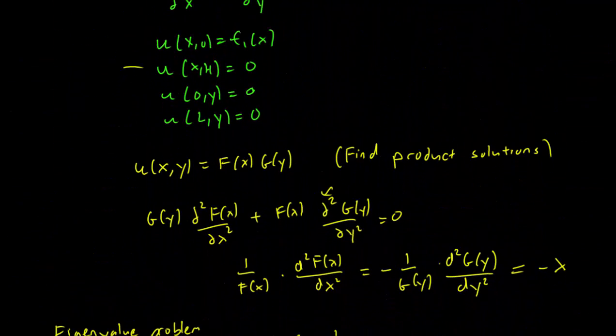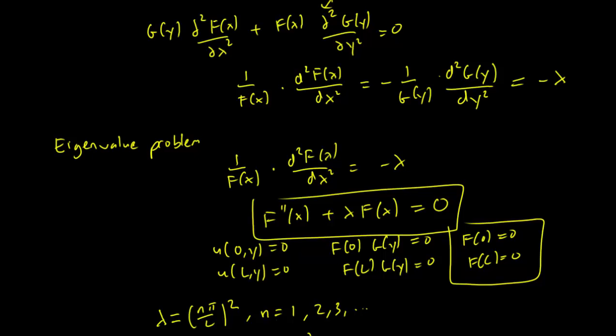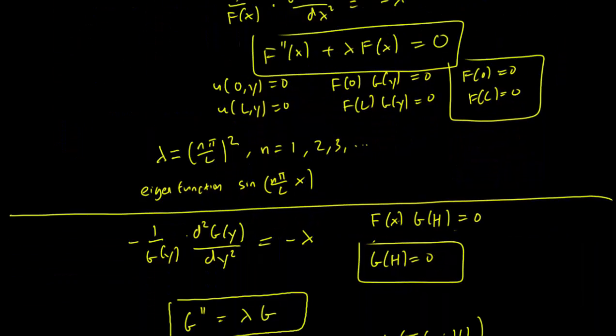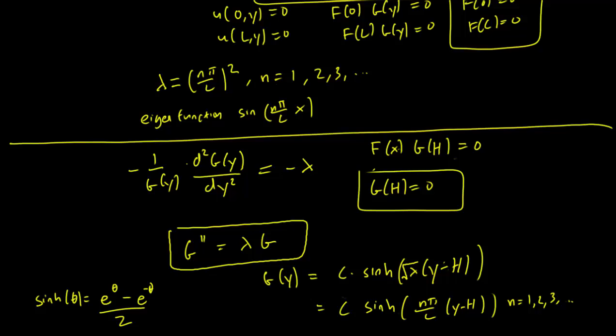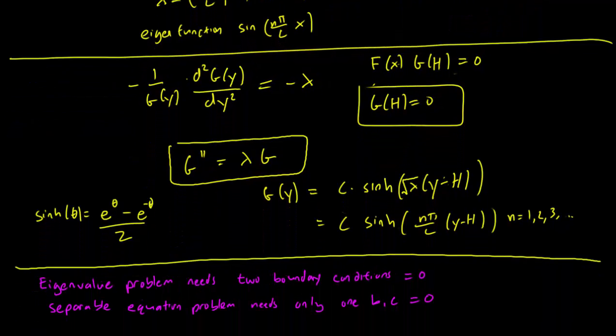As you may remember, here are our boundary conditions. And we know that the y boundary condition, the only one we have is u(x,h) equals 0, that's set to 0. So there's only one y boundary condition set to 0, whereas there are two x boundary conditions set to 0, which are u(0,y) equals 0 and u(l,y) equals 0. And that's kind of how we knew that f(x) needed to be an eigenvalue problem, when g(y) needed to be a separable equations problem.